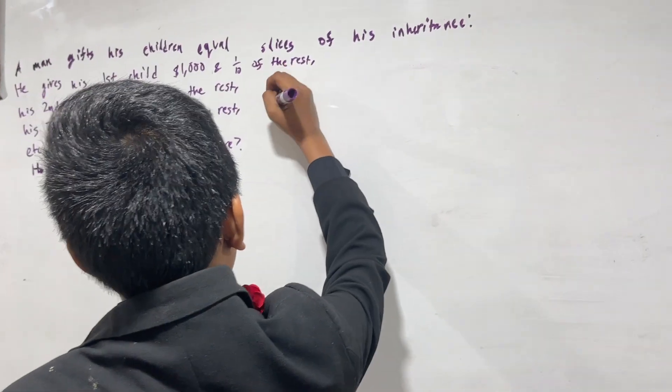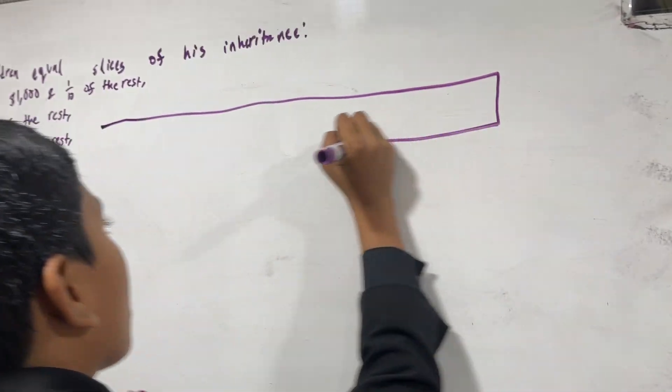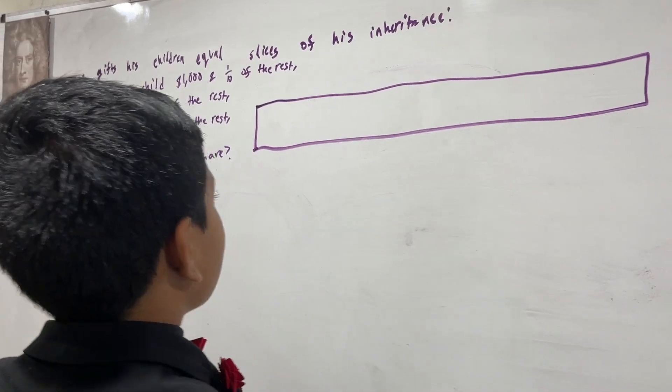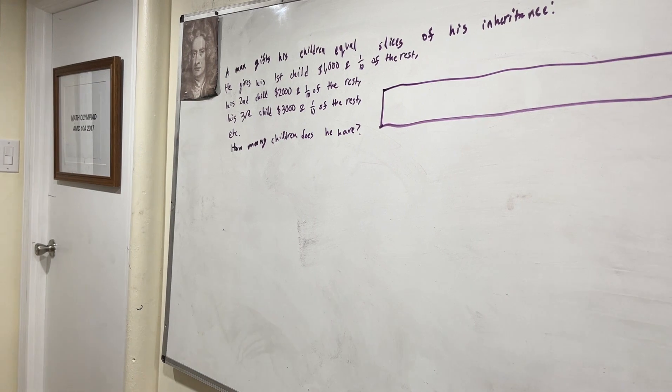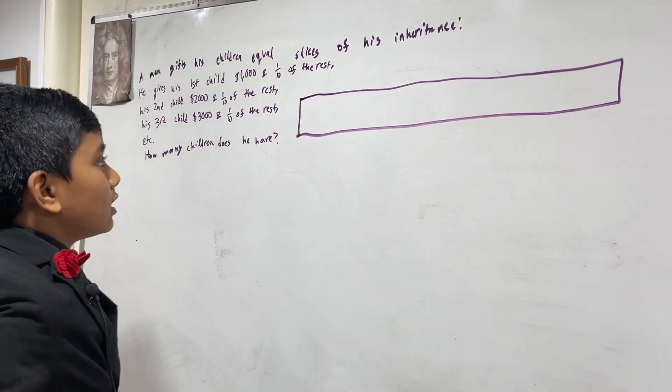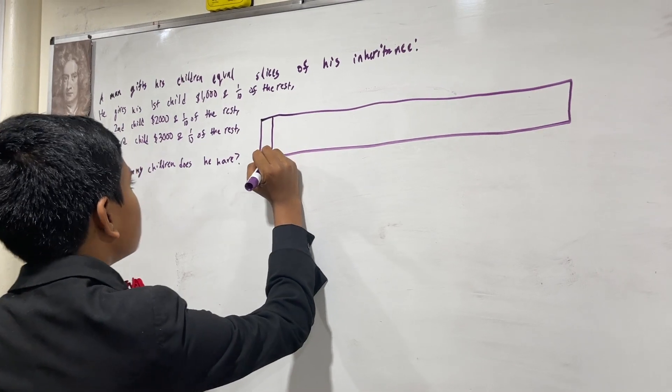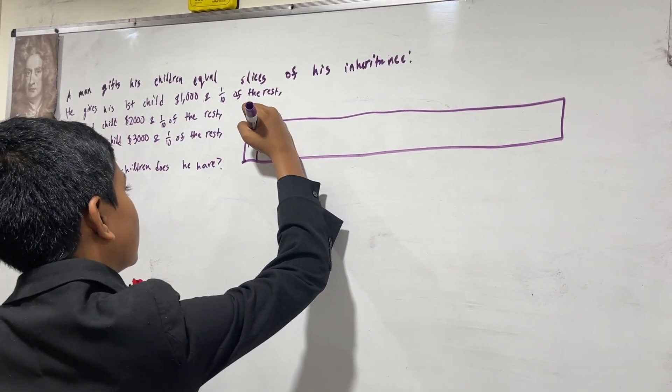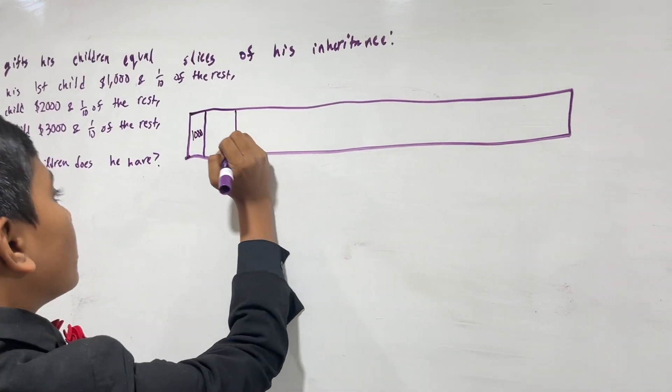Now, this is daunting at first, but let's take a money bar, where we can kind of see the portions of money that he gives to his children. So, he gives his first child one thousand dollars, so one thousand and then one tenth of the rest.